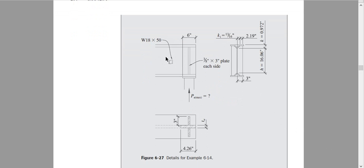This is the section — it is a W18x50. The support bearing plate is 6 inches, and we are providing a stiffener plate here. The plate is 3/8 by 18, with thickness and width of 3 inches on each side, meaning one plate on each side of the beam web, as shown in the cross-section.